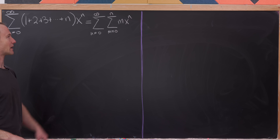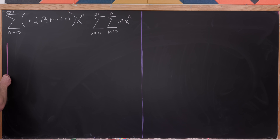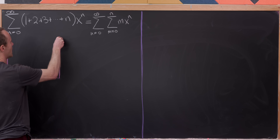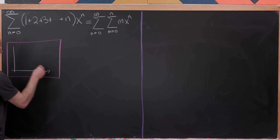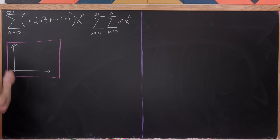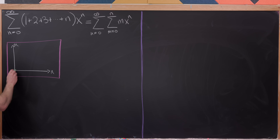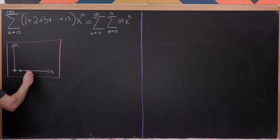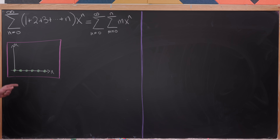The next thing I want to do is switch the order of summation. Let's make a little picture with two axes — this is the m axis and this is the n axis. n is going from zero to infinity, so we have points at zero, one, two, three, four, five, and so on.